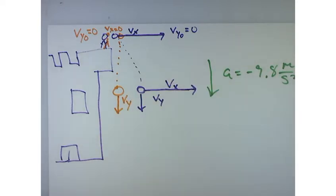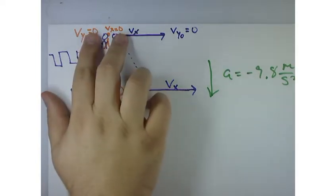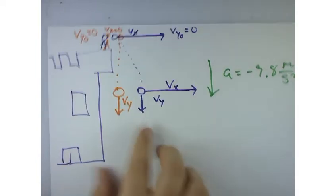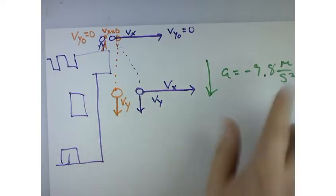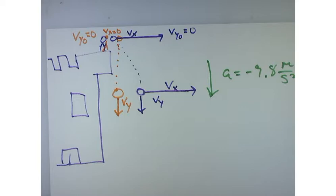Because they're both started at zero. And the only thing that changes the Y direction is the acceleration. And so since they're both accelerating at 9.8 meters per second, then their velocity should be exactly the same at this point in time.